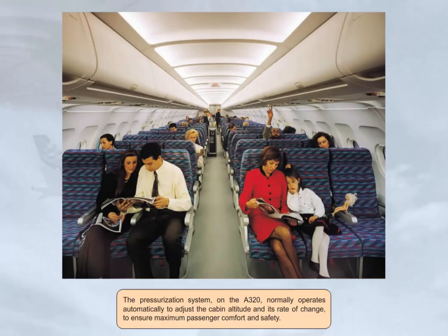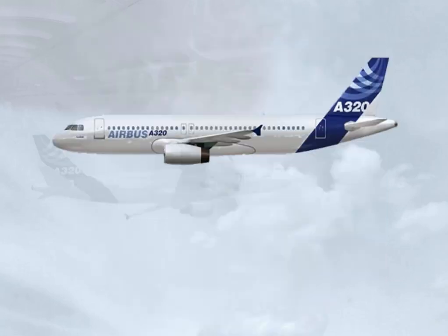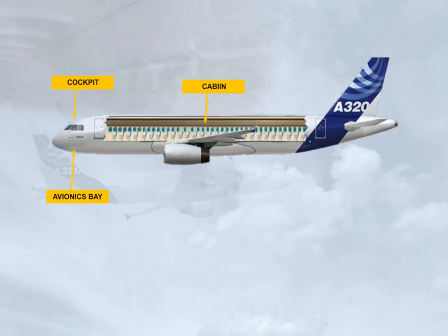The pressurization system on the A320 normally operates automatically to adjust the cabin altitude and its rate of change to ensure maximum passenger comfort and safety. The pressurized areas are the cockpit, the avionics bay, the cabin, and the cargo compartments.